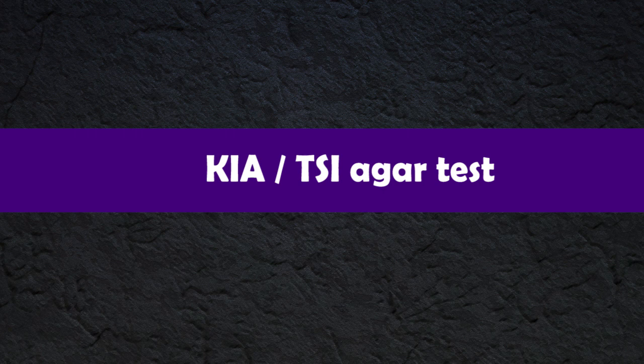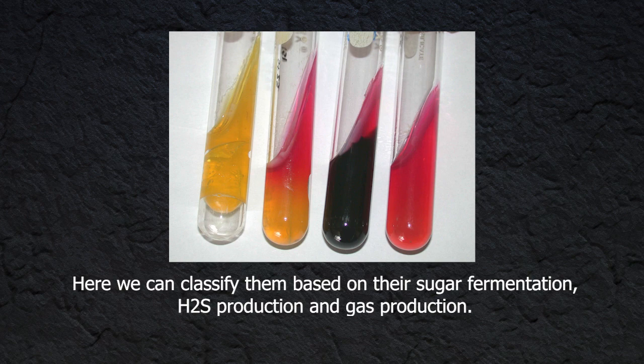In the motility test it is motile due to its flagella. One of the important tests for coliforms is the KIA or TSI agar test. Here we can classify them based on their sugar fermentation, hydrogen sulfide production, and gas production. In this test, Citrobacter gives an A/A pattern with positive gas and hydrogen sulfide production.